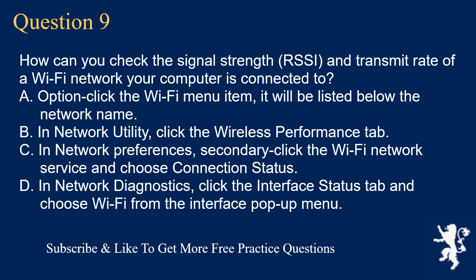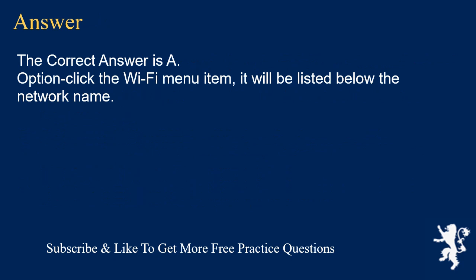Question 9. How can you check the signal strength (RSSI) and transmit rate of a Wi-Fi network your computer is connected to? A. Option-click the Wi-Fi menu item; it will be listed below the network name. B. In Network Utility, click the Wireless Performance tab. C. In Network Preferences, secondary-click the Wi-Fi network service and choose Connection Status. D. In Network Diagnostics, click the Interface Status tab and choose Wi-Fi from the Interface pop-up menu. The correct answer is A: Option-click the Wi-Fi menu item; it will be listed below the network name.